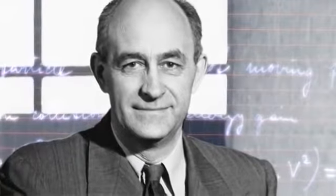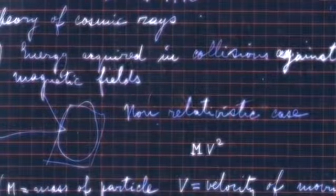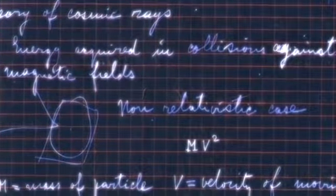In 1949, physicist Enrico Fermi worked out how what he called magnetized clouds could accelerate cosmic rays. Later studies showed that a variant of his method, called Fermi acceleration, worked especially well in supernova remnants.